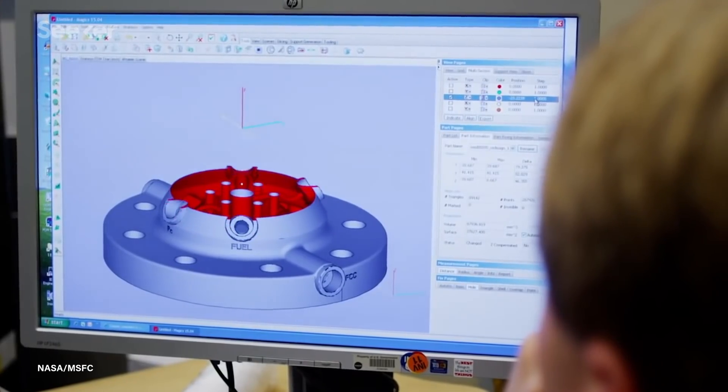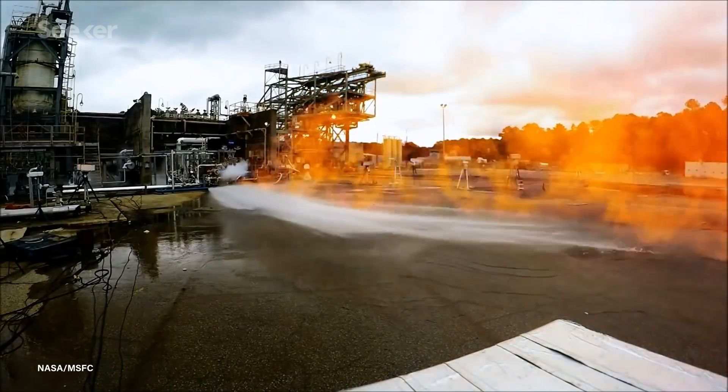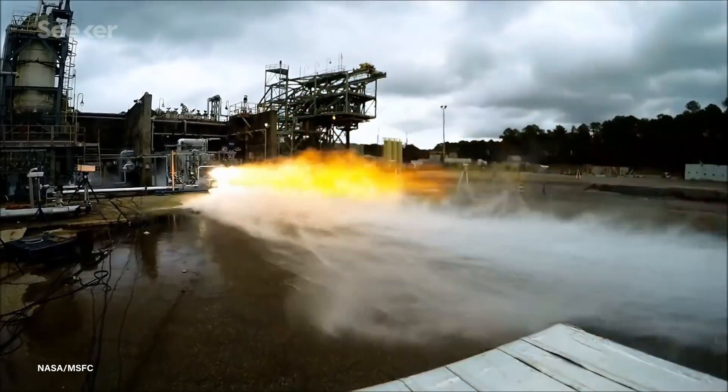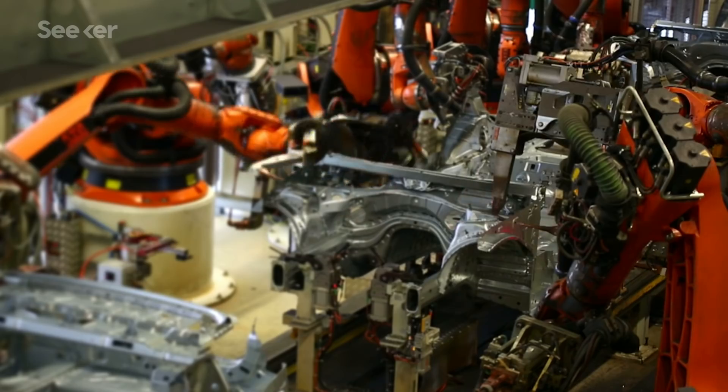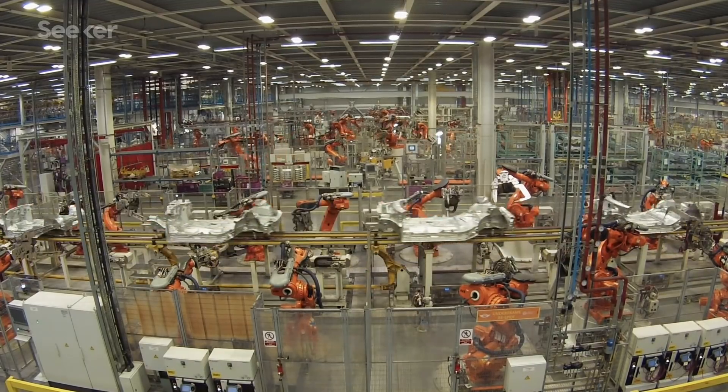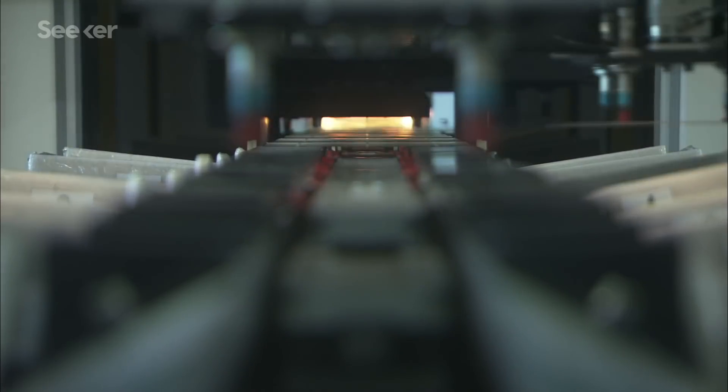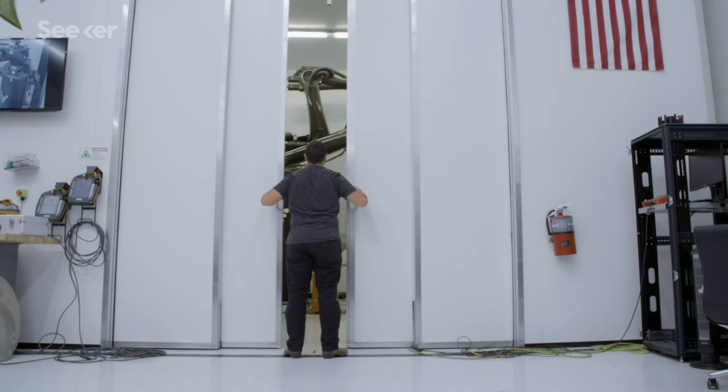While 3D printing has been explored by others in aerospace for years now, Relativity tells us they're doing something different. Often other companies will take a traditionally manufactured assembly and look at each piece of it and try to figure out which one is best applicable to printing and then print that traditionally designed part. For Relativity, it all starts from the ground up.